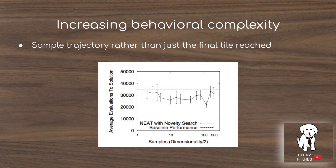Another interesting component is the behavioral complexity analysis. Sampling the full trajectory of maze navigation rather than just the final point — for example, sampling 100 different xy pairs to define a unique behavior in the archive — shows that even with this increased dimensionality of the behavioral space, the novelty search is still able to perform the task.